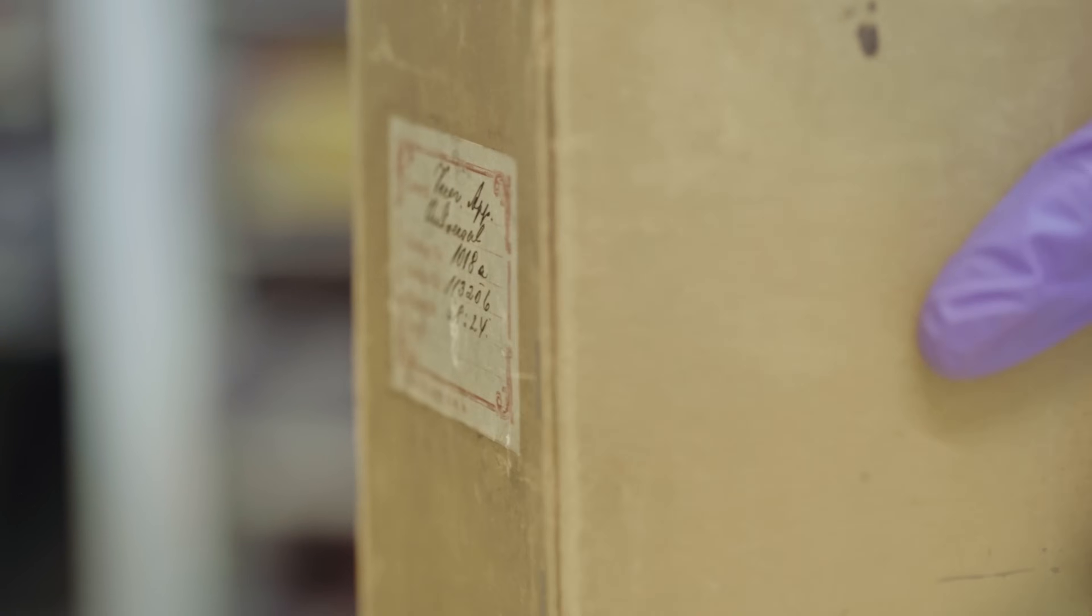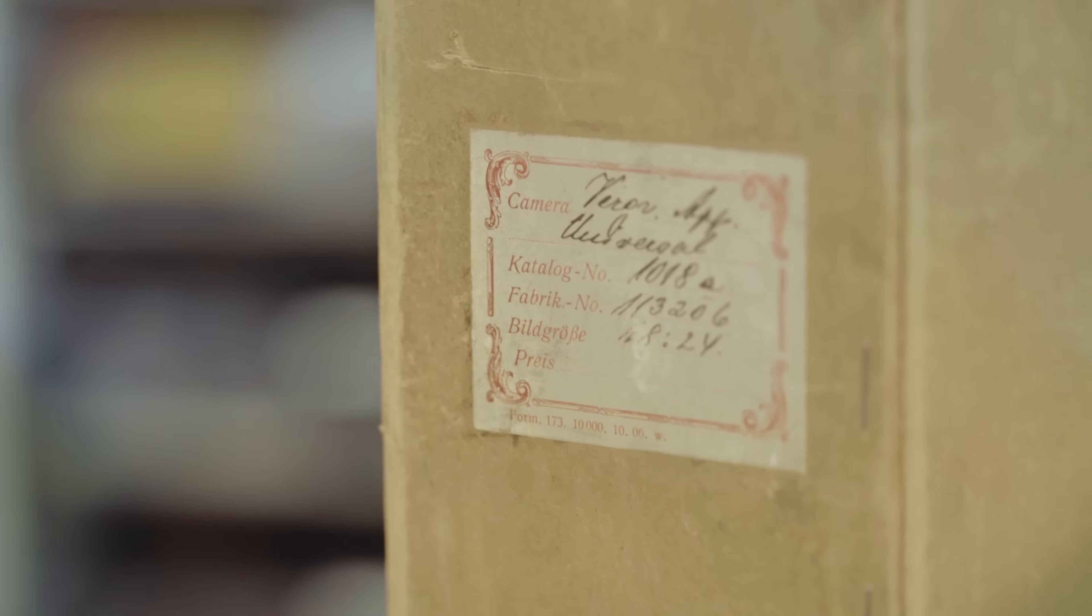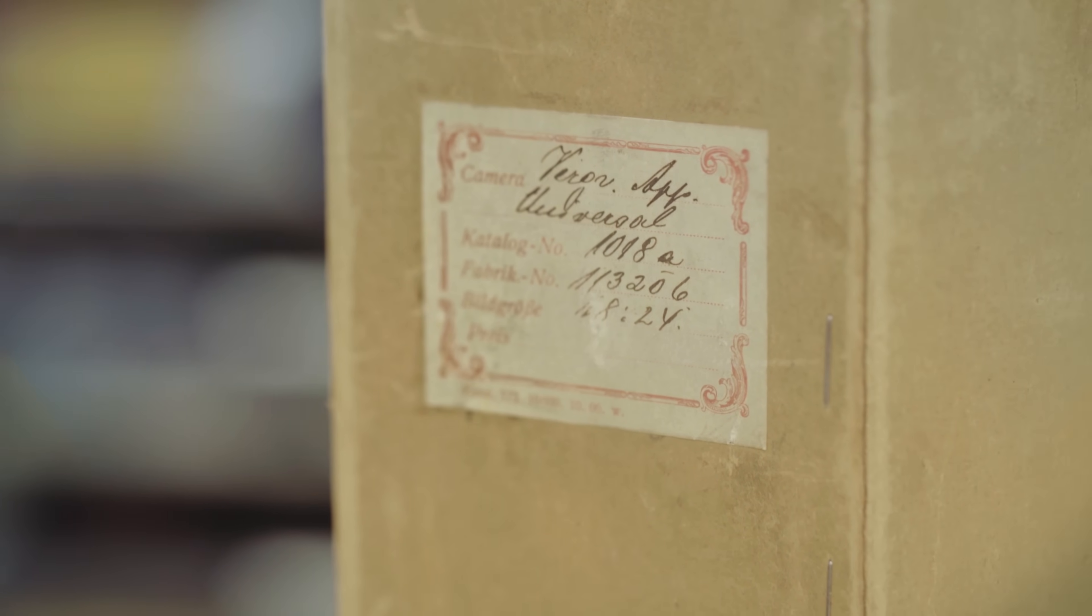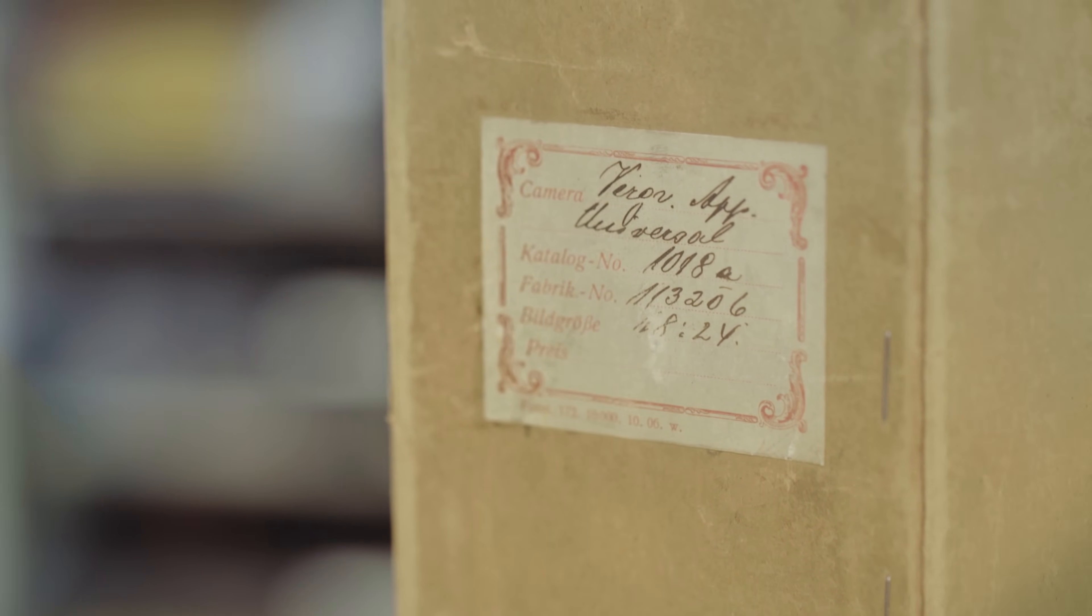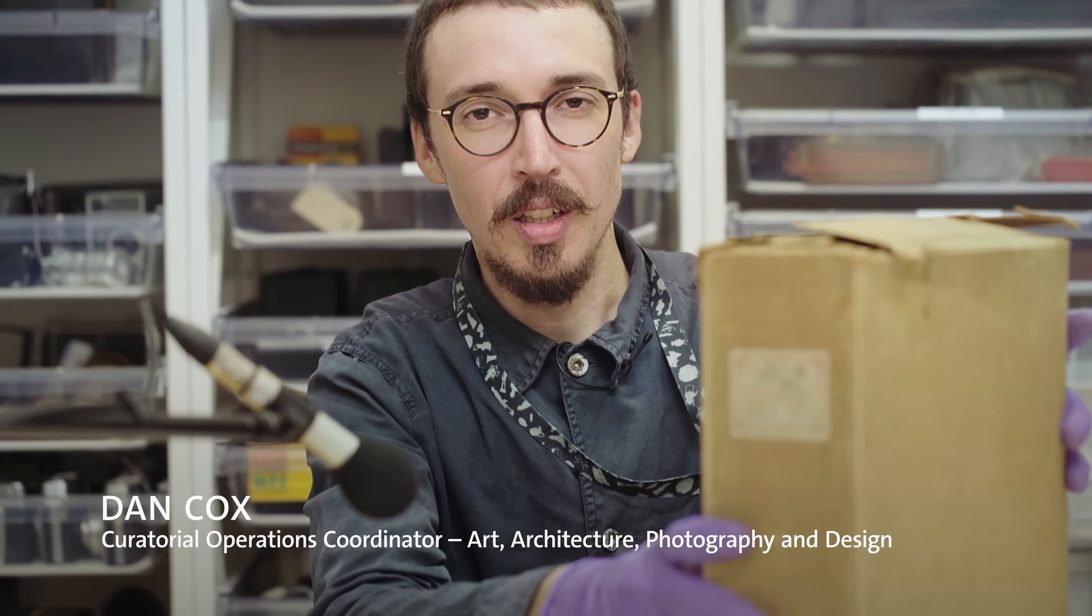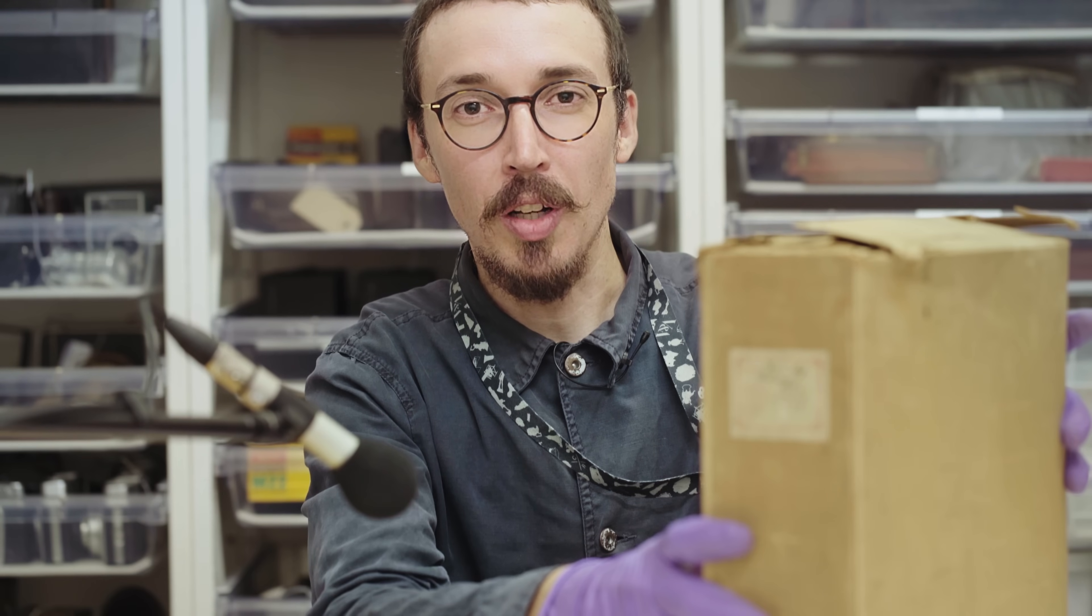This is a daylight enlarger. This was used for making photographic prints using photographic negatives. I'm going to be cataloguing this object from the Royal Photographic Society collection for the museum's online catalogue.